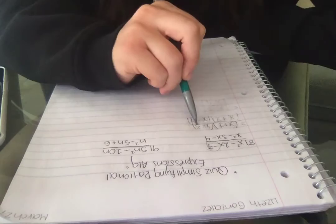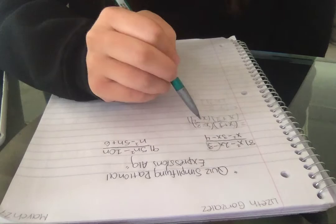The numbers I chose were positive 1 and minus 3, because 1 minus 3 makes negative 2 and 1 times minus 3 makes minus 3.